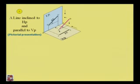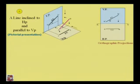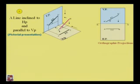In the orthographic projection for case 3, the projection of the front view — when the line is inclined at angle theta from the horizontal plane — will also be at angle theta above the XY line. When the horizontal plane (top view projection) is rotated 90 degrees clockwise, the true length of line AB will appear below the XY line.